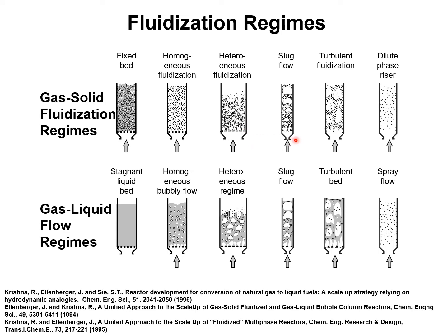If the bed vessel is very narrow, this regime results also in slug flow. As the gas velocity is increased further, we have turbulent fluidization. The fluidized bed regenerator in the FCC process operates in a regime that is either the heterogeneous or turbulent regime — more currently, the turbulent regime is the preferred regime of contacting. Further increase in gas velocity results in dilute phase riser transport, which is the regime prevalent in the FCC reactor.